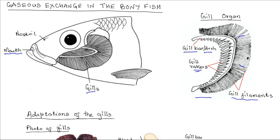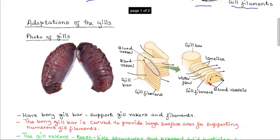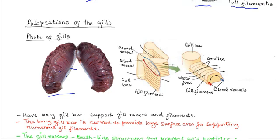Now, each gill is an organ. Here is a photo of the actual gills. You can see the numerous filaments. There is a gill bar and also arising from the gill bar, the gill rakers. Each tiny filament — these are the gill filaments attached to the gill bar.